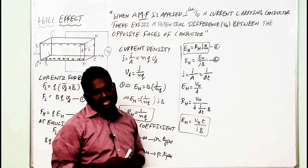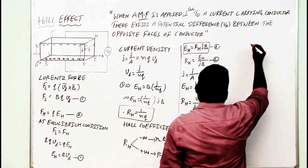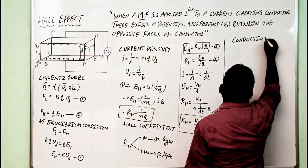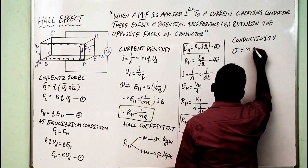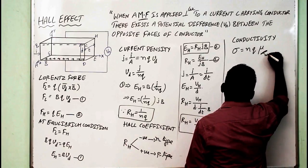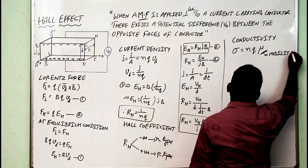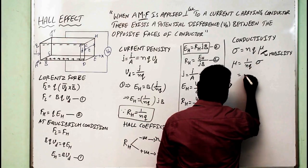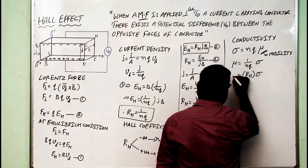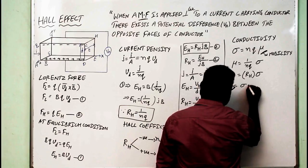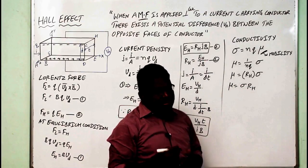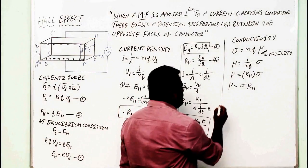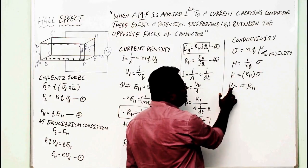Not only this — we can also calculate the mobility of the charge carriers. The conductivity of a material or its electrons is given by sigma equals N·Q·mu, where mu stands for mobility. We can write mu as (1/NQ)·sigma. Since 1/NQ equals R_H, we get mu equals sigma times R_H. Like this, one can calculate the mobility of the charge carriers — how easily the electrons and holes are moving in a given semiconductor or material.